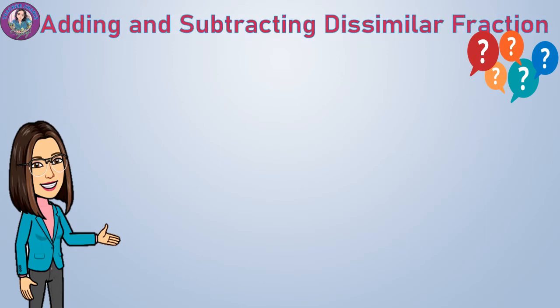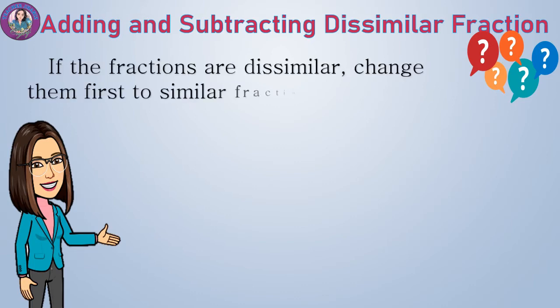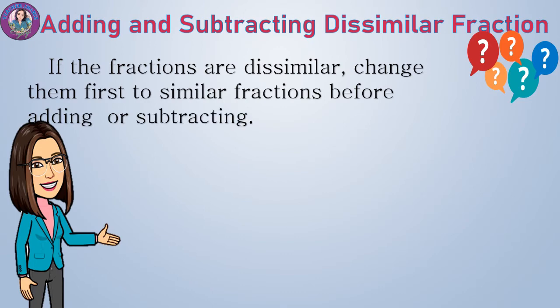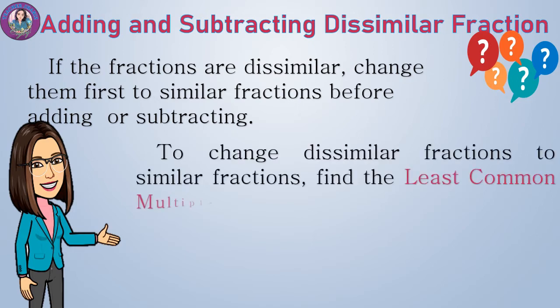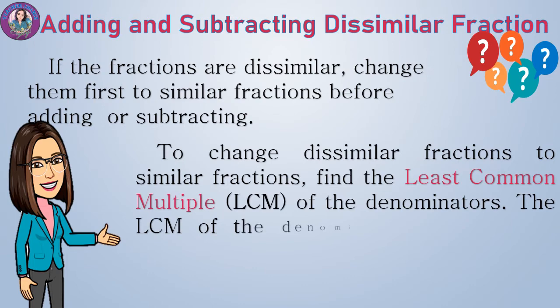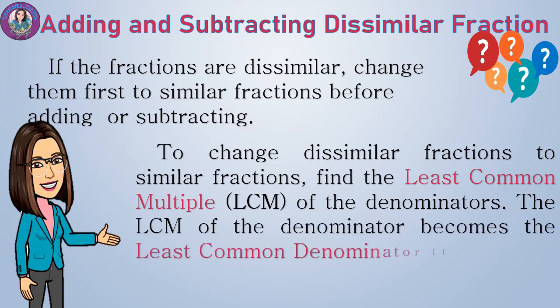How about adding and subtracting dissimilar fractions? If the fractions are dissimilar, change them first to similar fractions before adding or subtracting. To do this, find the least common multiple, or LCM, of the denominators. The LCM of the denominators becomes the least common denominator, or LCD, of the fractions.